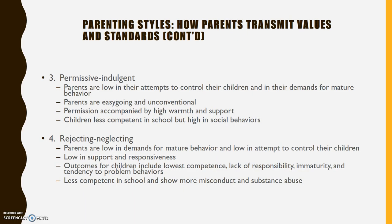The permissive indulgent parent — low in restrictiveness but high in warmth and responsiveness — is low in attempts to control their kids and demand certain kinds of behavior. They tend to be easygoing and often unconventional, with high warmth and support. Children of permissive indulgent parents are less confident in school, but are highest in their social behaviors.